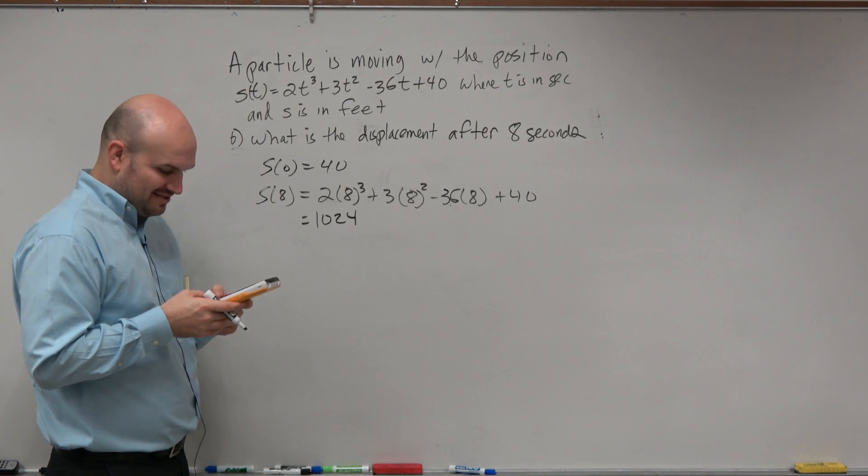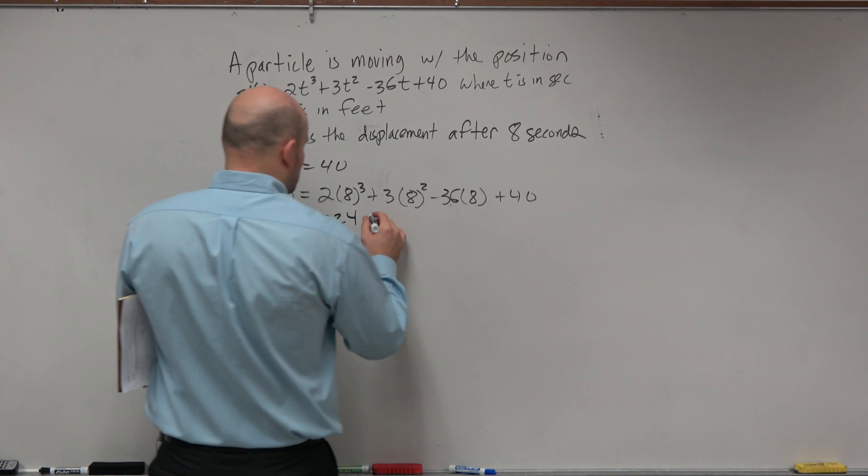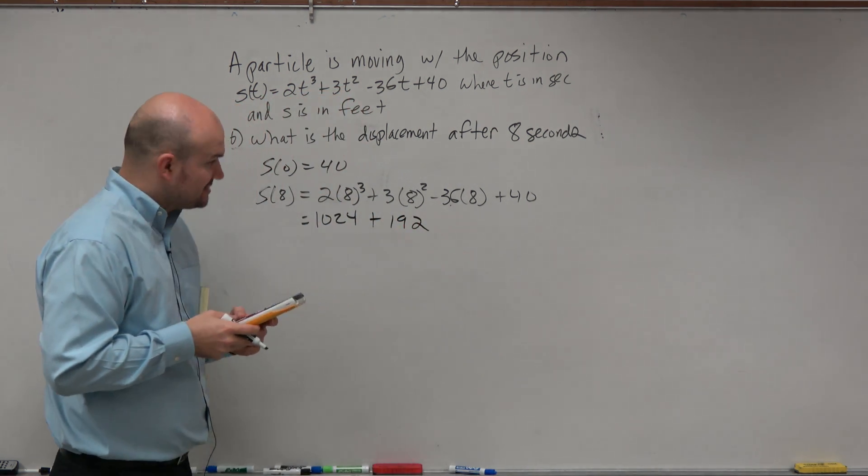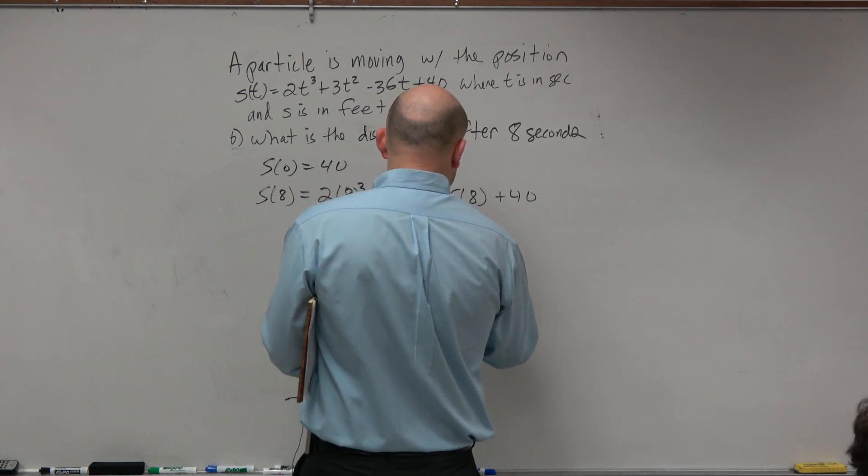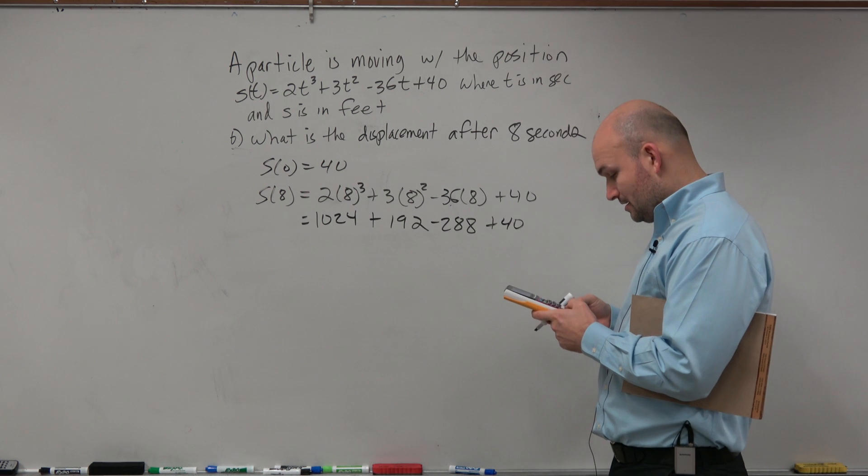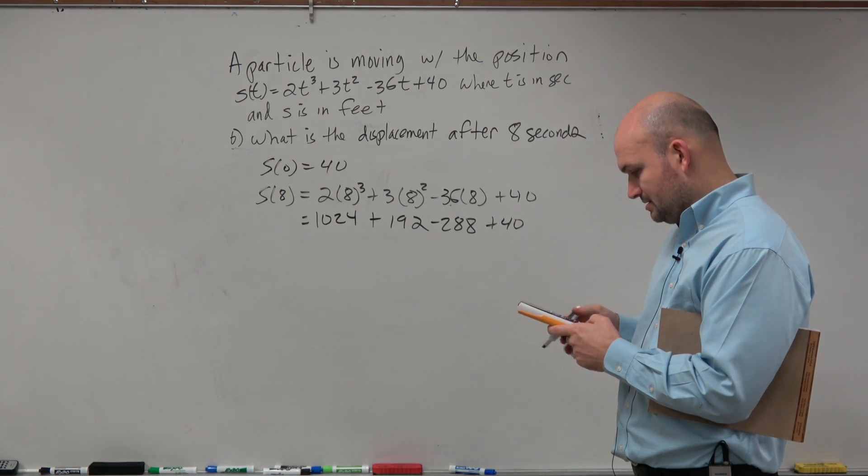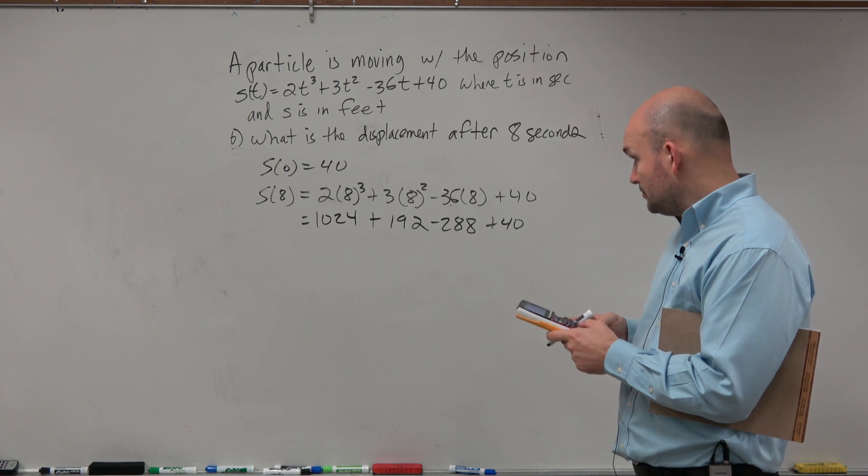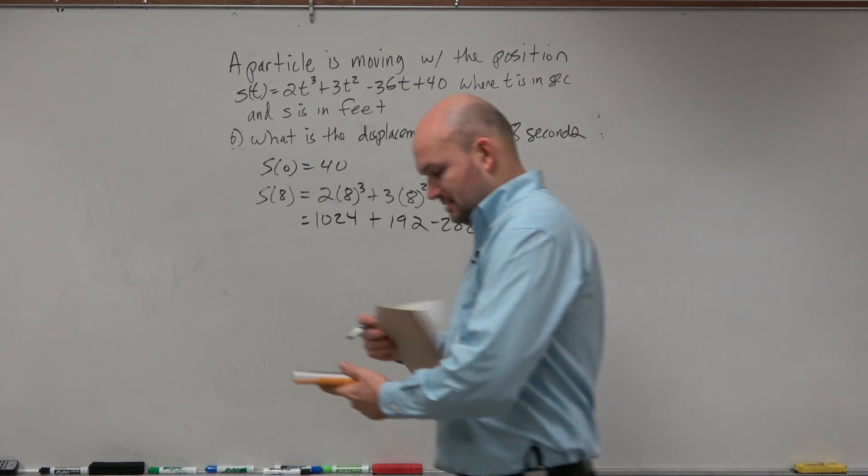8 squared, 64 times 3. I could probably do that in my head, but I don't want to. That's 192. Negative 36 times 8. Negative 288 plus 40. So now let's go ahead and add all this stuff up. Plus 192 minus 288 plus 40. 968.